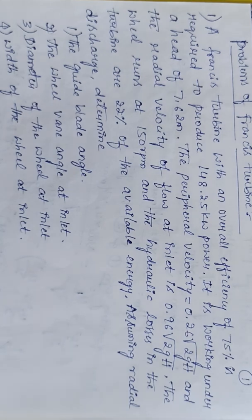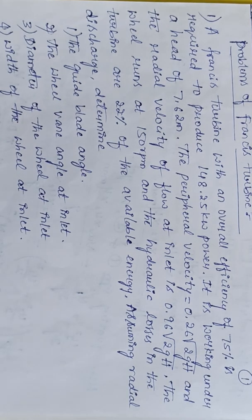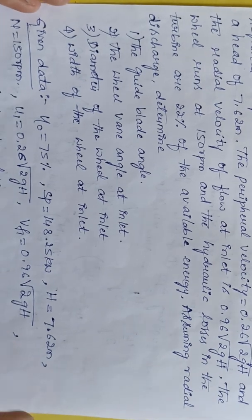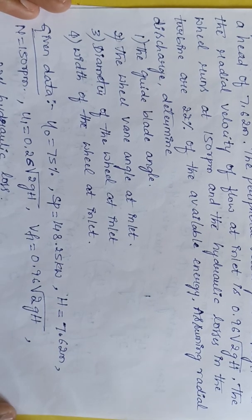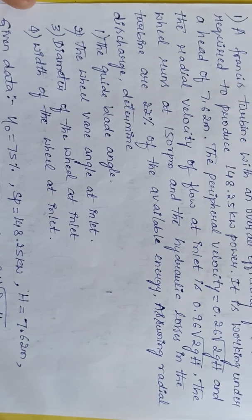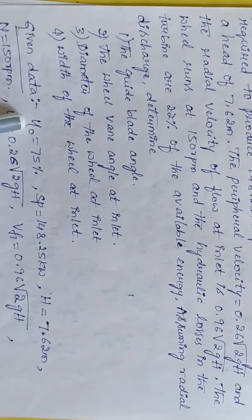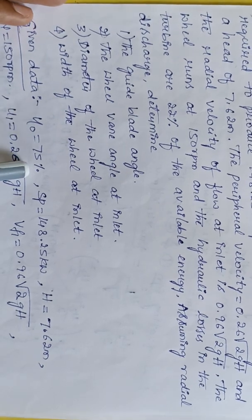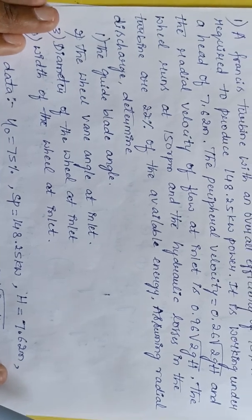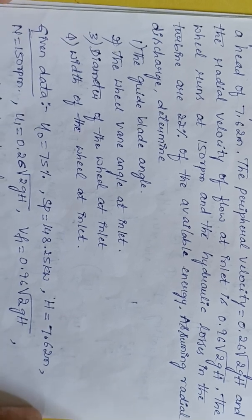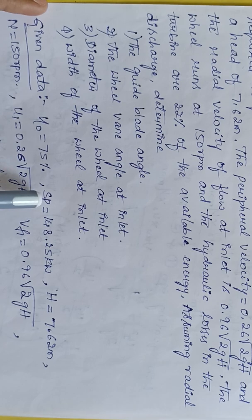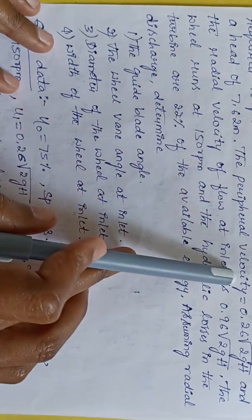Now let us write the given data. The Francis turbine is working under a head H of 7.62 meters. The overall efficiency, represented as η₀, is 75%. The turbine produces a shaft power SP of 148.25 kilowatt.